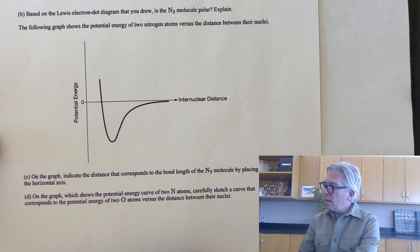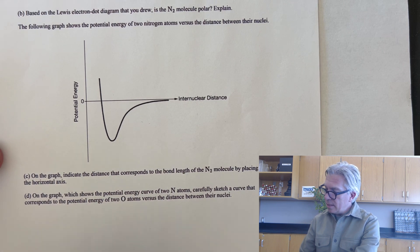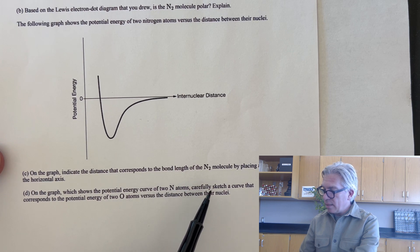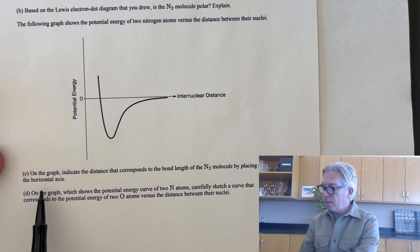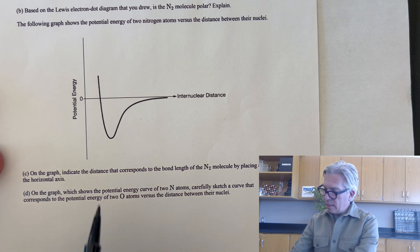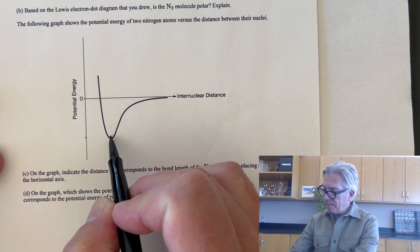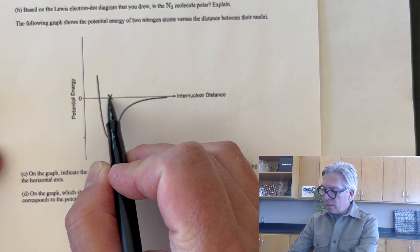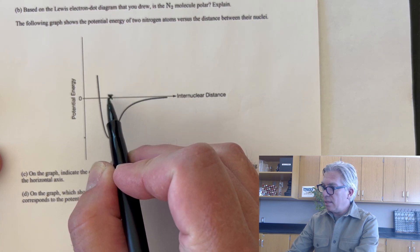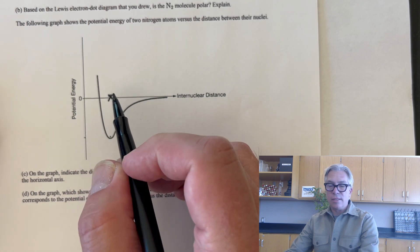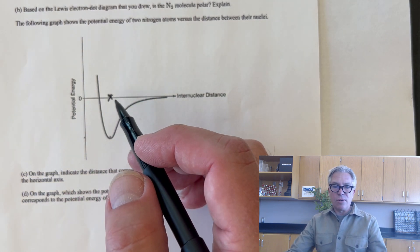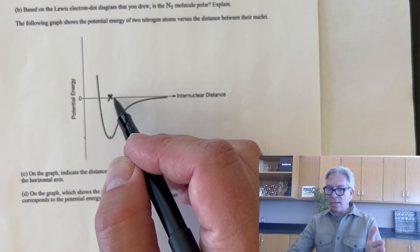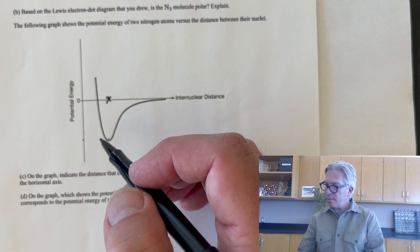On the graph, indicate the distance that corresponds to the bond length of the N2 molecule by placing an X on the horizontal axis. So we've already said that the bond length is the distance from here to here. So I'm going to put an X on the horizontal axis there. That represents the internuclear distance. You're just estimating on a graph. So I'm sure there's a little wiggle room, but you want to get it right at the minimum.